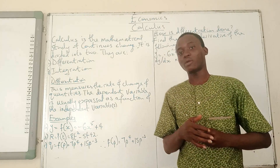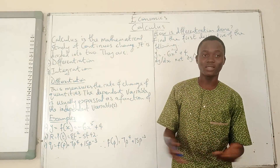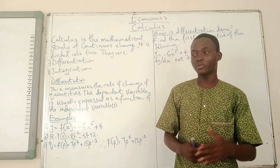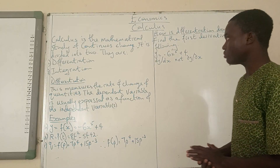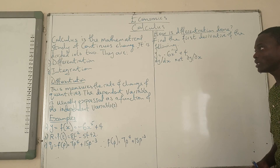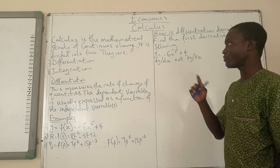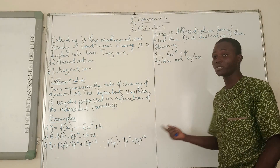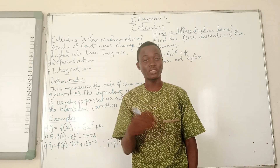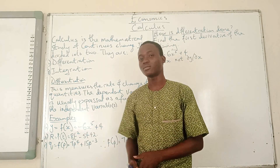That is to tell you beforehand that we won't be dealing with angles, like sines, cosines, and all of that. We won't be dealing with those things. Calculus is a mathematical study of continuous change. It is divided into two categories. When we say mathematical study of continuous change, we are looking at the change in something as a result of a change in another thing.